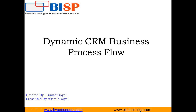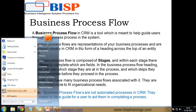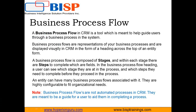A business process is a tool which is meant to help or guide users through a business process in the system. It's a series of steps — it's like a wizard — and users can follow those steps, moving from one step to another, and at the end achieve a specific outcome or result. Business process flows are a representation of your business processes and are displayed visually in CRM in the form of a heading across the top of an entity form.